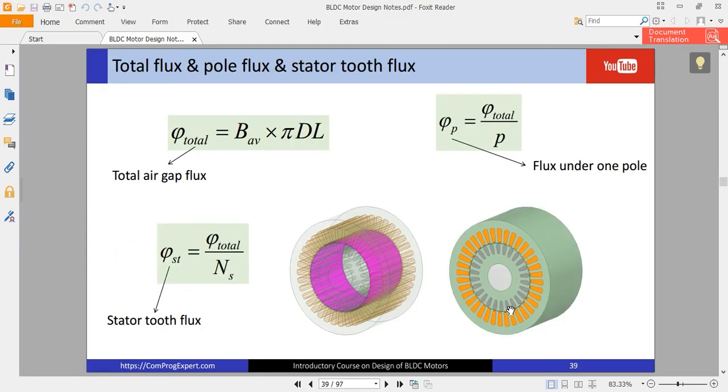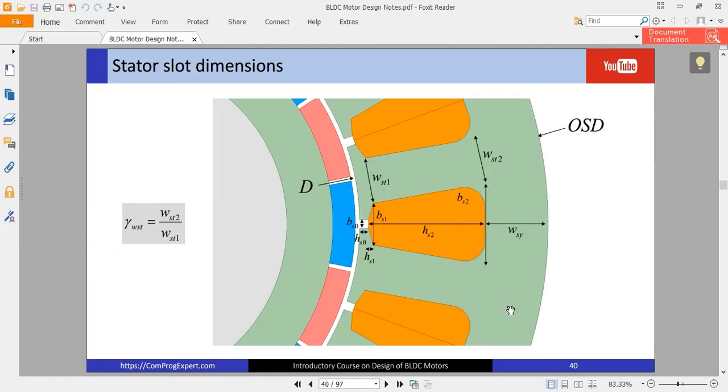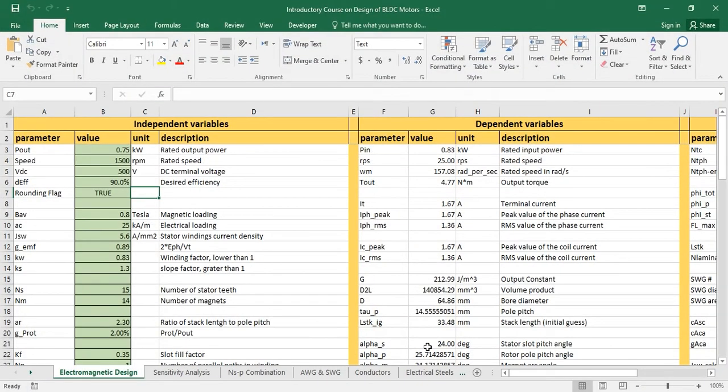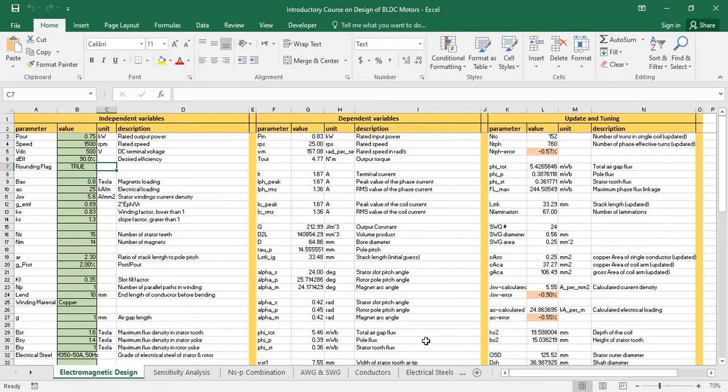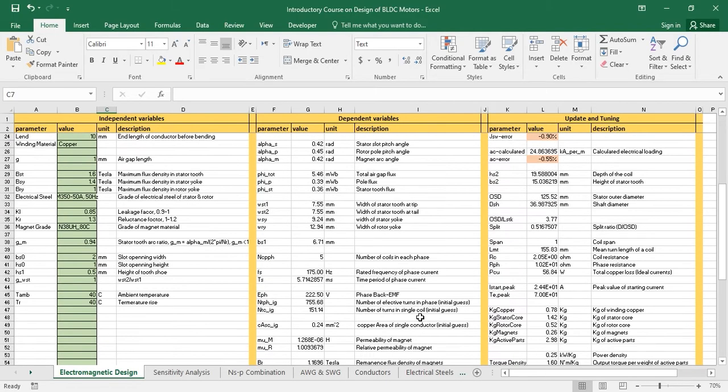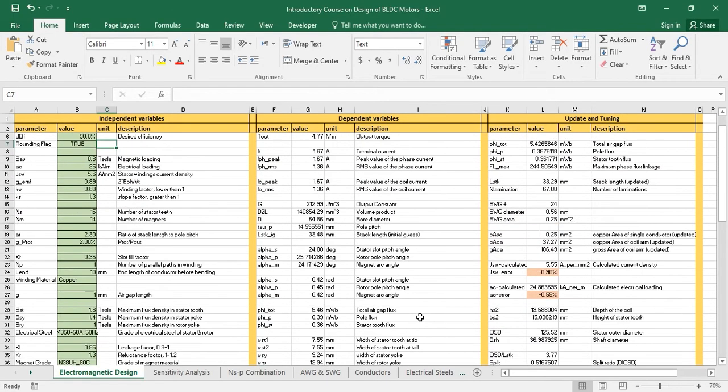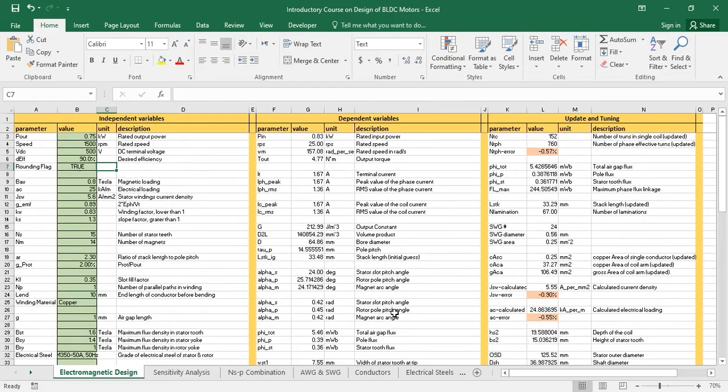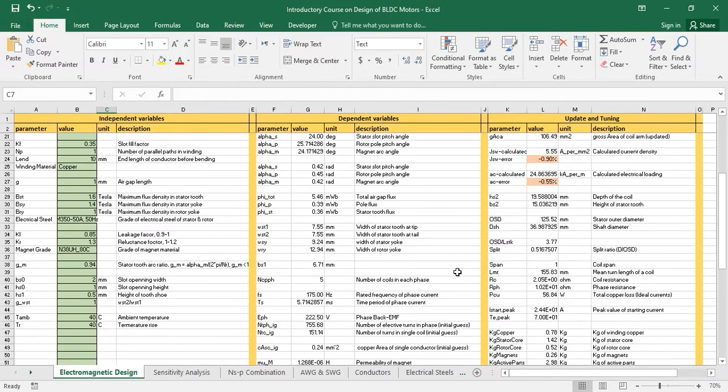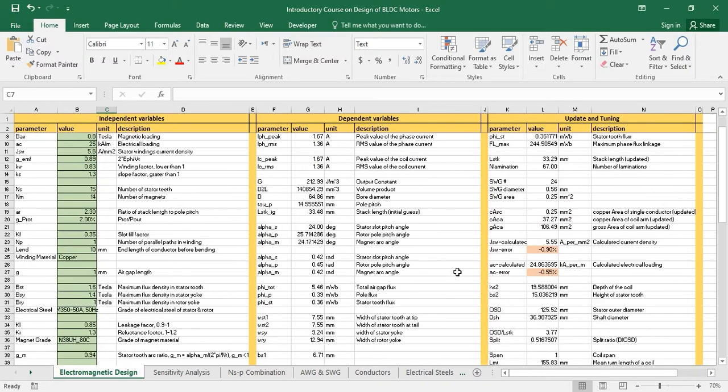And then we will implement these analytic equations into this Excel file. Actually, I prepared this Excel file for analytic design of the motor and I implemented all of those equations into this Excel file to calculate the motor main dimensions, properties, number of turns, weight of active parts, and so on.